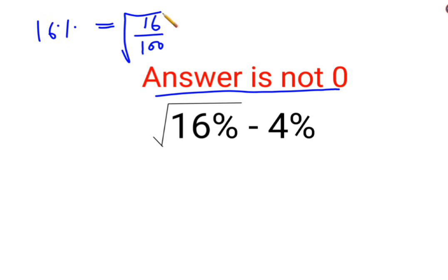So when you take that into a root, because here also we had a root, you get the answer as 4 upon 10.